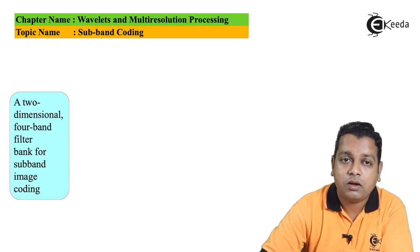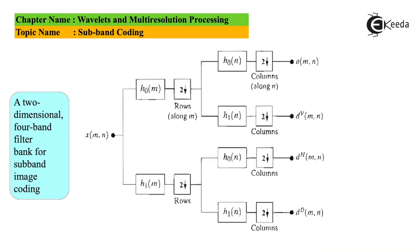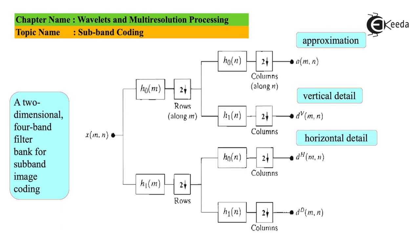A two-dimensional four-band filter bank for subband image coding is shown. The input X(m, n) passes through filters H₀(m) and H₁(m) along rows, followed by down-samplers with factor 2. Then filters H₀(n) and H₁(n) are applied along columns, again with down-samplers. This produces four outputs: A(m,n) representing the approximation, D^V(m,n) for vertical details, D^H(m,n) for horizontal details, and D^D(m,n) for diagonal details.